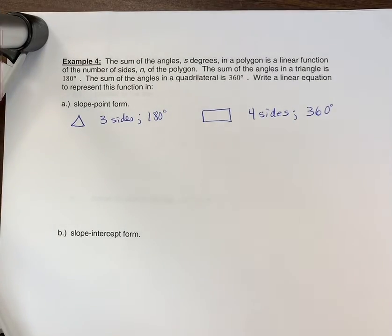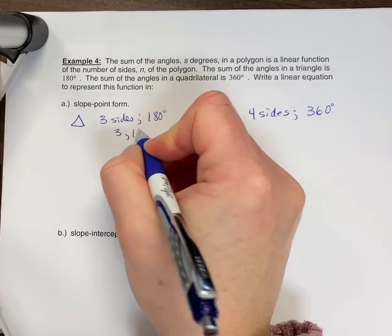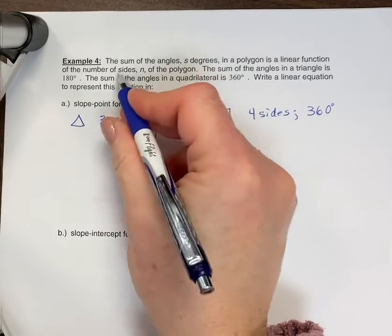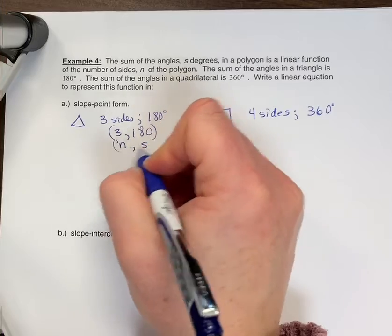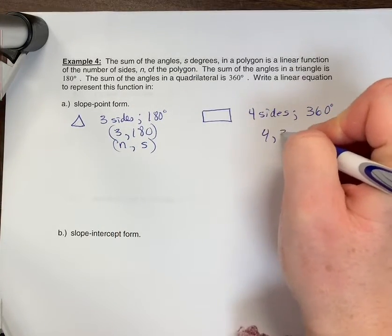Three sides in a triangle add to 180. So we can think about this as a coordinate of 3 and 180, and this would be representing the number of sides, so n, number of sides, and s is the sum of the sides. So those are the actual coordinate variables we're using. And then this would be 4 and 360.